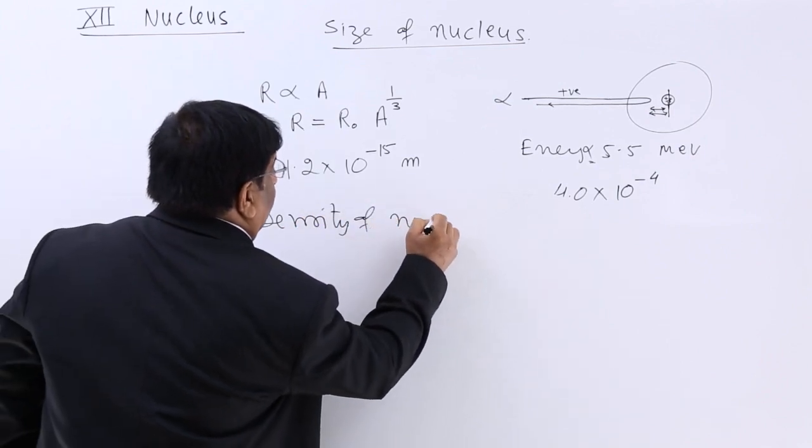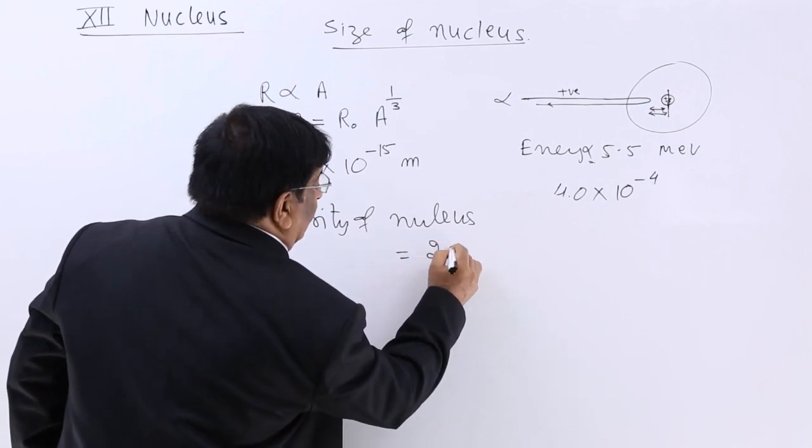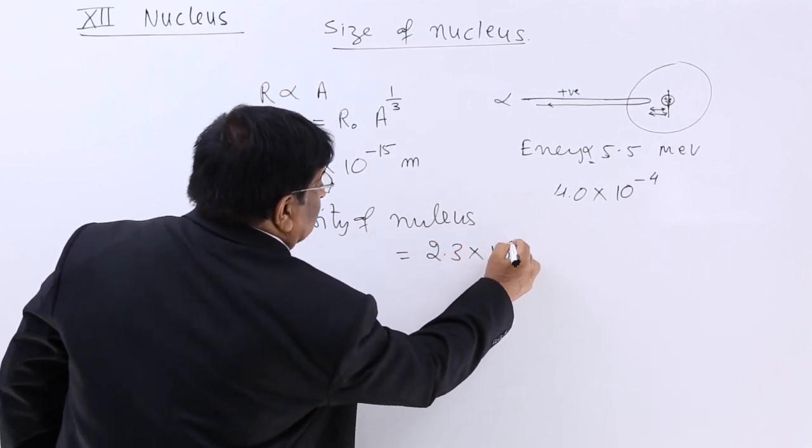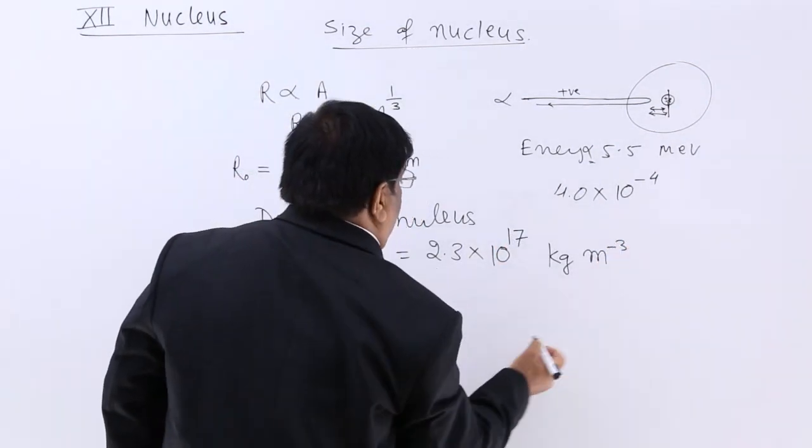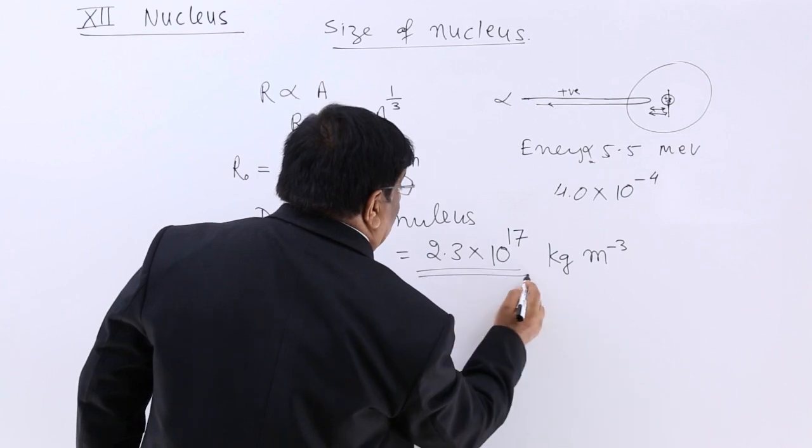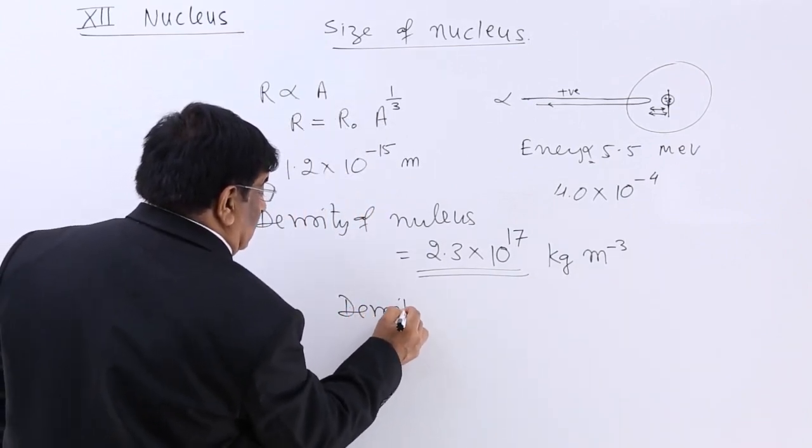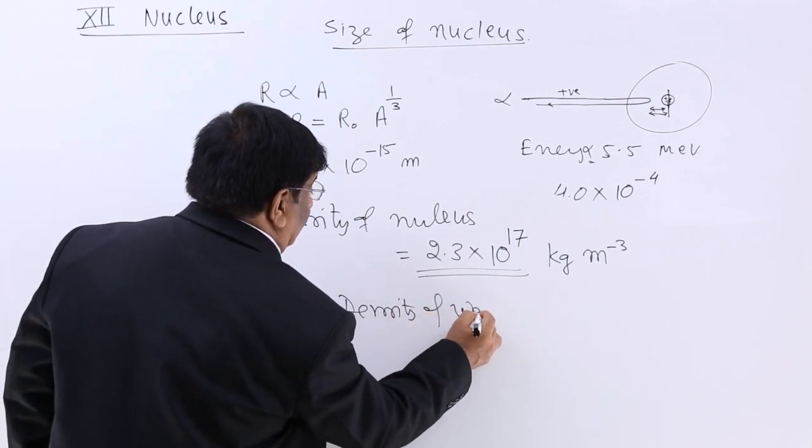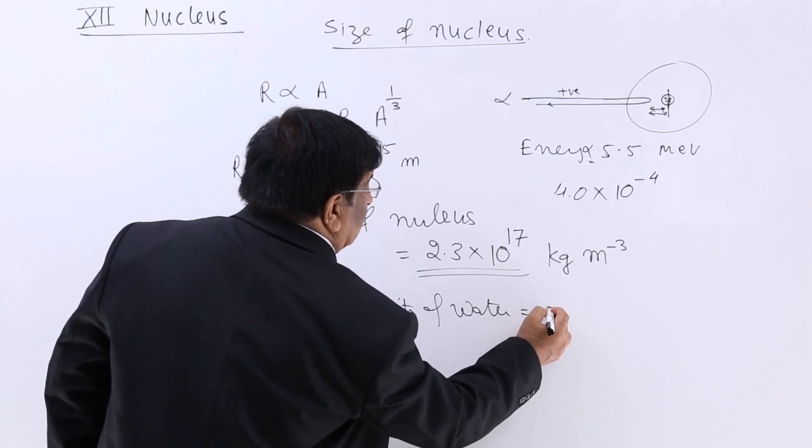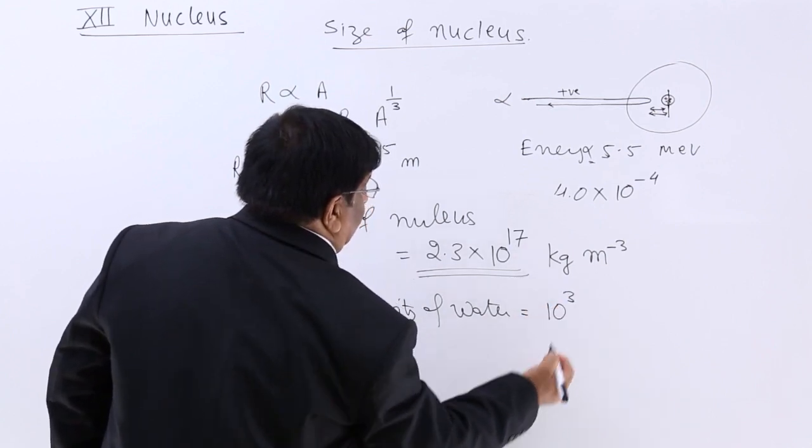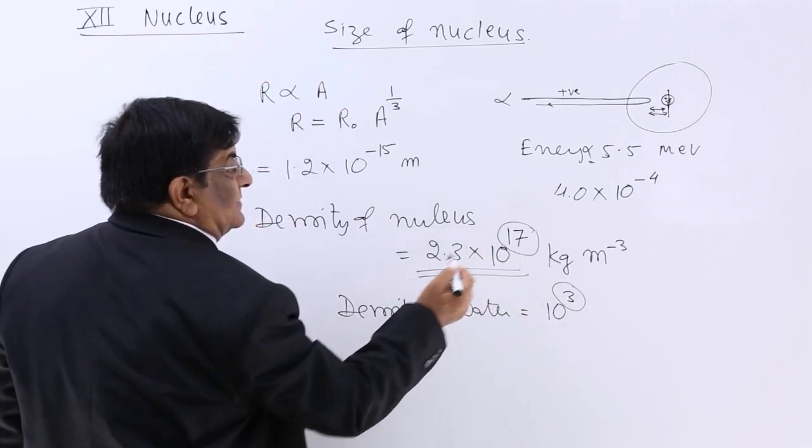Density of the nucleus is 2.3 into 10 to the power 17 kg per meter cube. This is a very high density. The density of water is how much? Density of water is 10 to the power 3. See, power 3. See this, power 17.